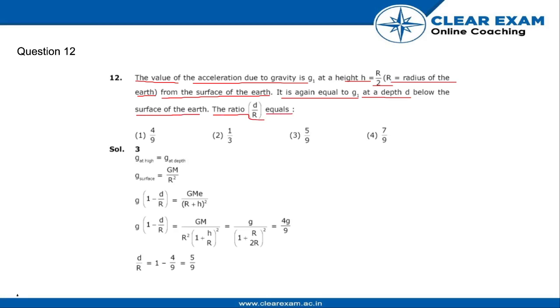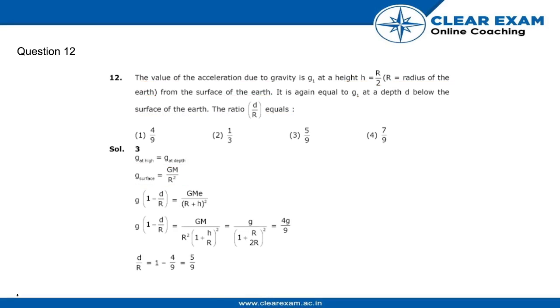We have given g at height is equal to g at depth. The value of g at depth is g times 1 minus d by r.